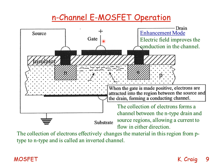When the gate is made positive — from zero volts to a positive voltage — electrons are attracted into the region between the source and the drain and form a conducting channel. The collection of electrons forms a channel between the N-type drain and source regions, allowing current to flow in either direction. This effectively changes the material in that region from P-type to N-type, and it is called an inverted channel.